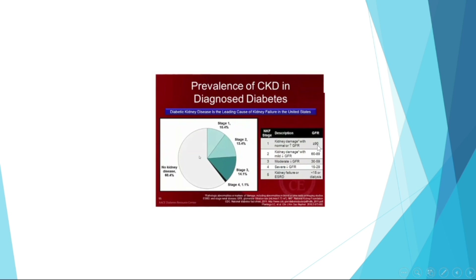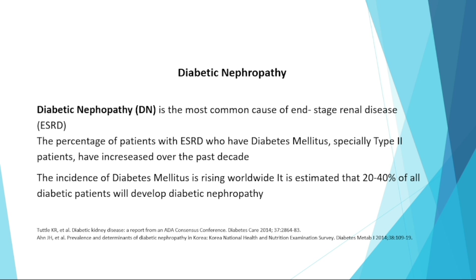The stages of chronic kidney disease by GFR: Stage 1 shows GFR greater than 90 with kidney damage but normal or increased GFR. Stage 2 is kidney damage with mild decrease in GFR, between 60 and 89. Stage 3 is a moderate decrease, GFR between 30 and 59. Stage 4 has GFR declining to 15–29. Stage 5 is end-stage renal disease with GFR less than 15 or dialysis.